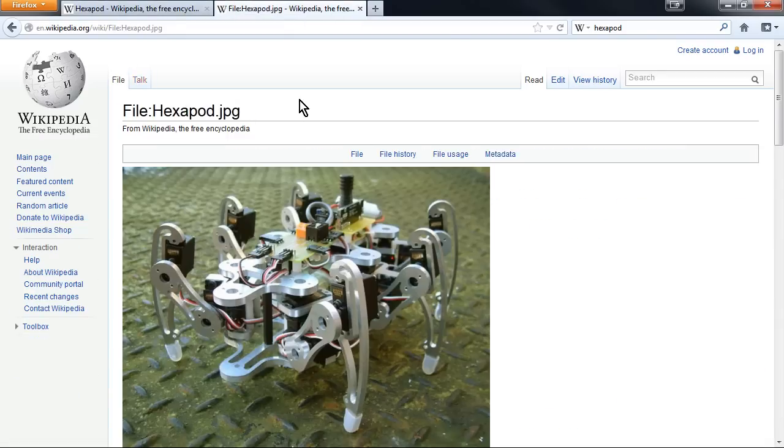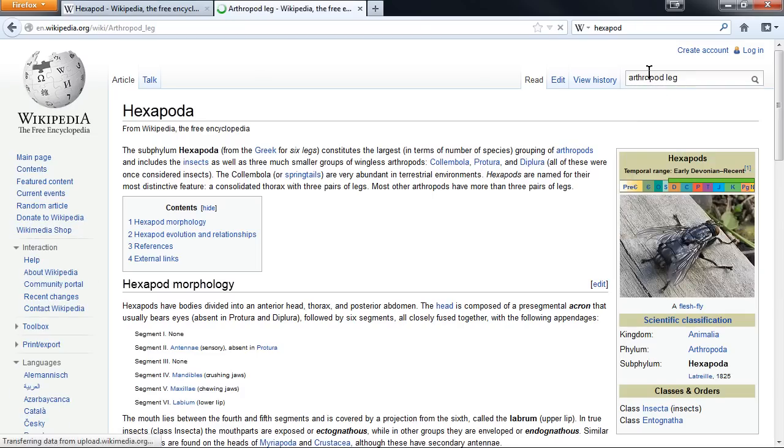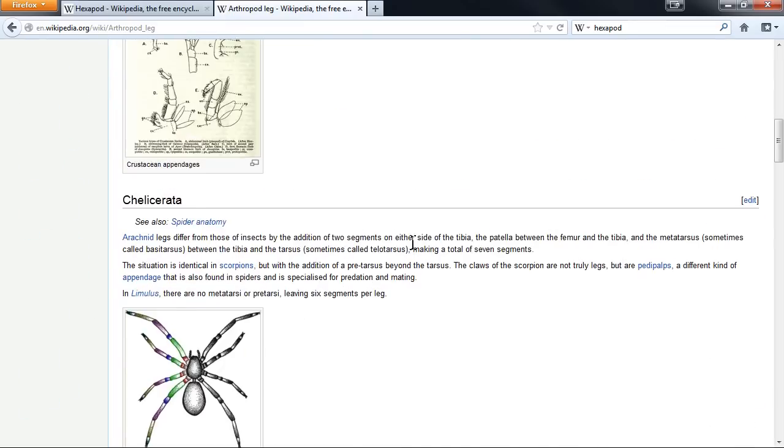Hexapod, or six-footed, in this case refers to a six-legged walking robot. Other use cases include in nature studies, where hexapod is a group of arthropods including insects. In fact, robot hexapods are inspired by these critters.